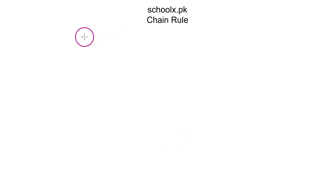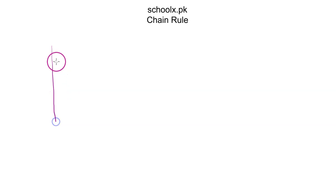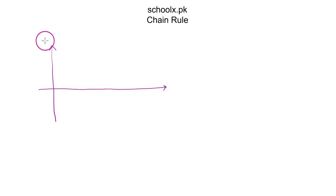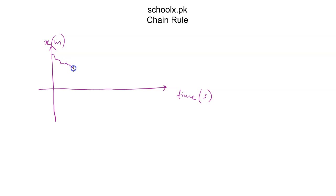Why do we actually need differentiation in our lives? Let's say there is a comet, asteroid, or meteoroid falling directly towards the Earth, and we are able to somehow plan and plot its displacement from the Earth with respect to time — in seconds. So let's say its displacement looks something like this, and it is coming towards here now.